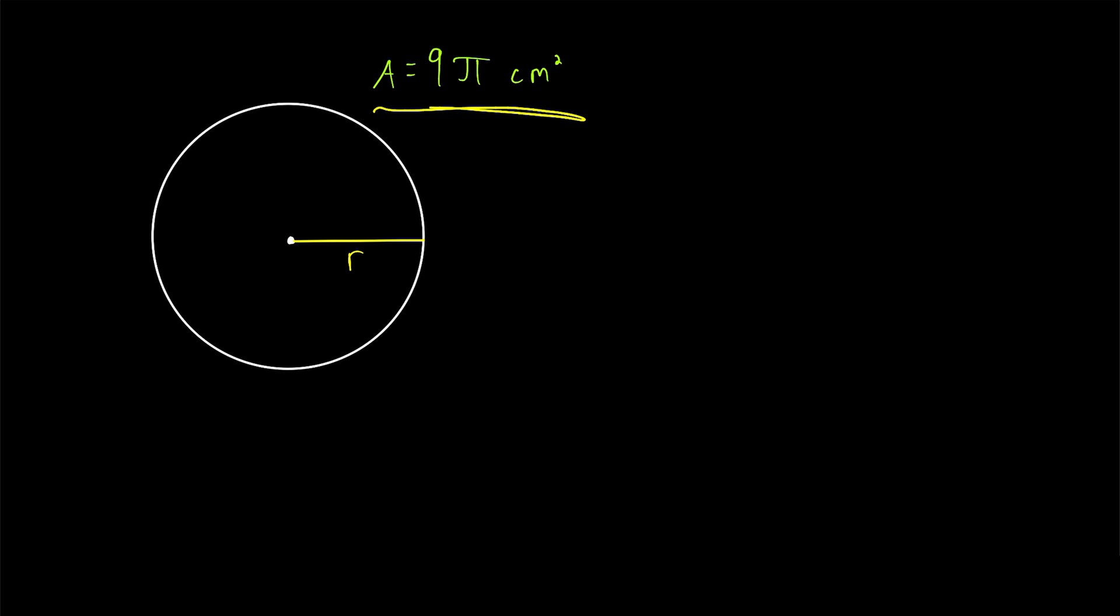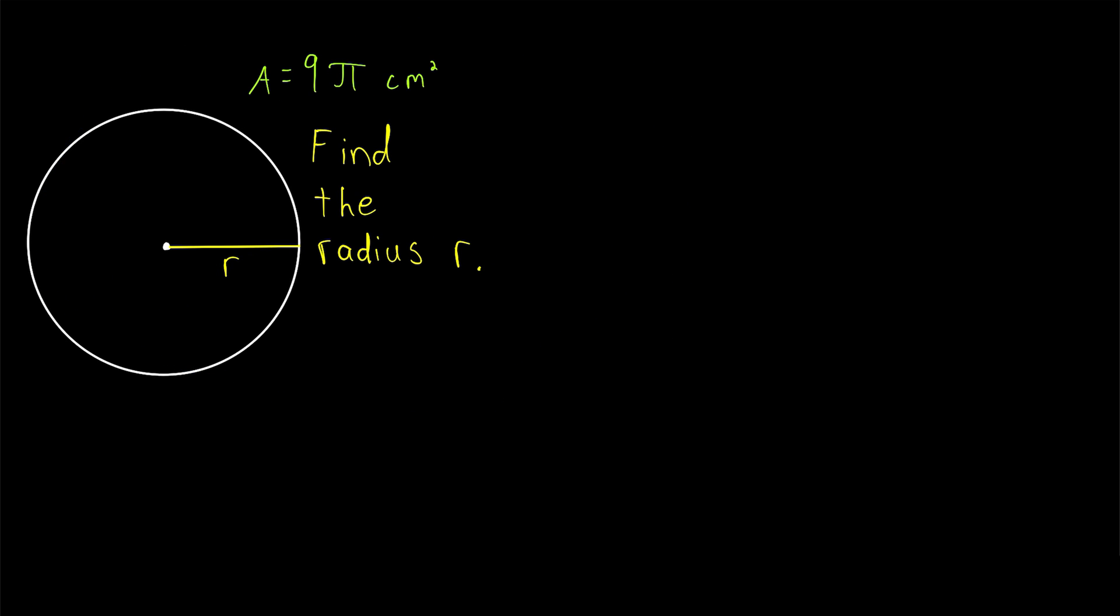What we want to know is given the area of the circle, how can we find the radius R? Well, do we know any relationship between the area and the radius of a circle? Of course we do.